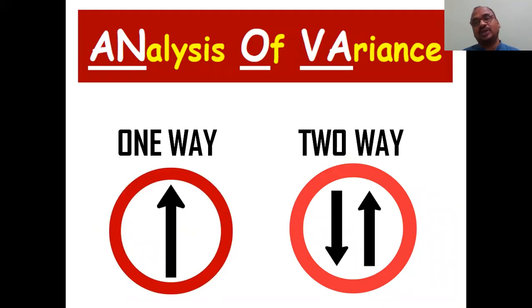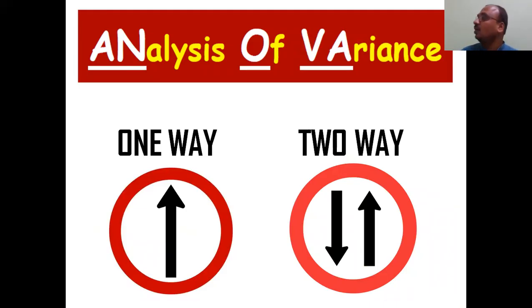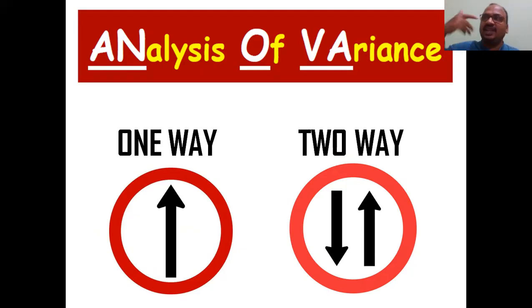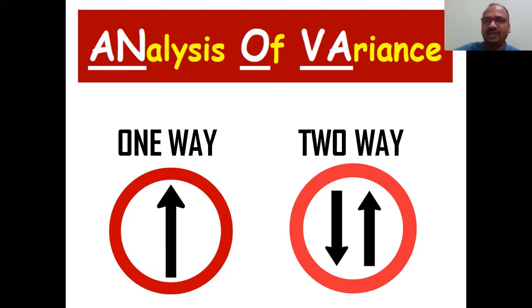ANOVA is of two types: one-way and two-way. One-way means you go in one direction freely. Two-way means you have to check two directions.